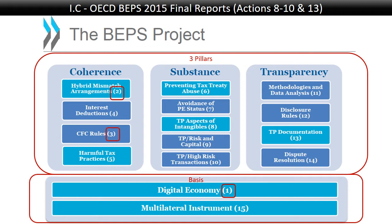Action 3 dealt with CFC rules, where they basically outlined the different ways in which you can have CFC rules to stop companies from setting up subsidiaries in tax havens and deferring the taxation of that income forever. Action 4 dealt with interest deductions — we need to make sure that companies don't erode countries' tax bases by pumping a huge amount of debt into their high-tax subsidiaries, and these are the choices of how you can stop that from happening.